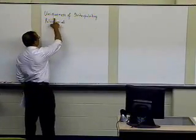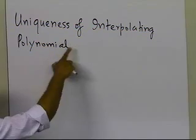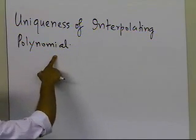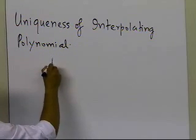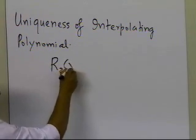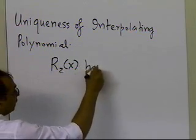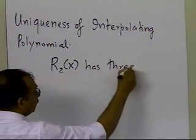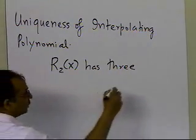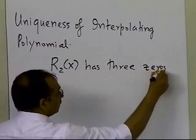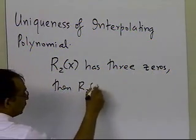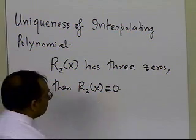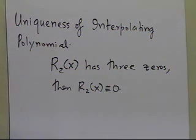In this segment, we're going to continue our discussion on uniqueness of interpolating polynomial. We were at the phase where I want to show that if R2 has three zeroes — if a second-order interpolating polynomial has three zeroes — then R2 of x is identically equal to zero. So let's see how that can be proved.